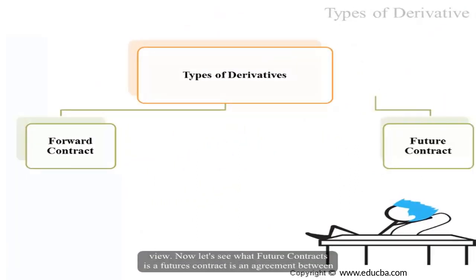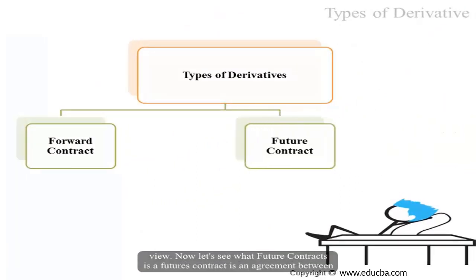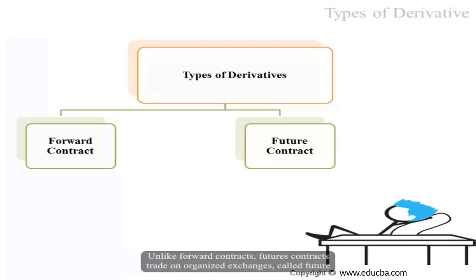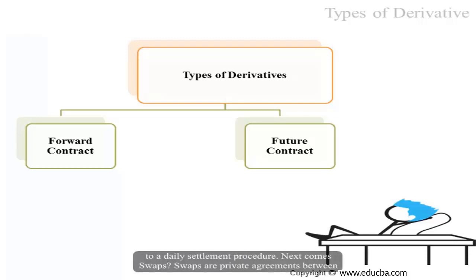Now let's see what a futures contract is. A futures contract is an agreement between two parties, the buyer and the seller, to buy or sell something at a future date. The contract trades on a futures exchange and is subject to a daily settlement procedure. Futures contracts evolved out of forward contracts and possess many of the same characteristics, but unlike forward contracts, they trade on organized exchanges called the futures market and are subject to daily settlement.